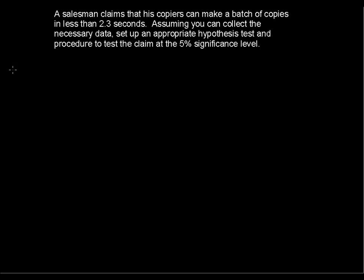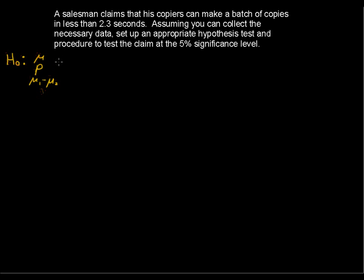First I'll set up the hypothesis testing procedure in general, and in parallel do this specific for this scenario. We have a null and an alternative hypothesis. The null hypothesis, denoted H₀, tests either the mean, the population proportion, a difference of means, or a difference of proportions, and so on for the parametric tests.